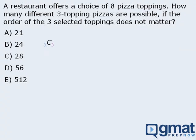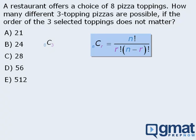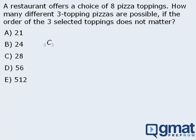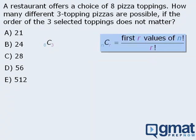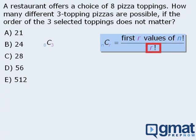Now all we need to do is evaluate eight choose three. One option is to apply the conventional formula for calculating combinations, but this is too much work. Instead, we can use this rule that says the combination n choose r is equal to the first r values of n factorial divided by r factorial. I'll show you why this shortcut works in a moment, but for now let's see how the technique works.